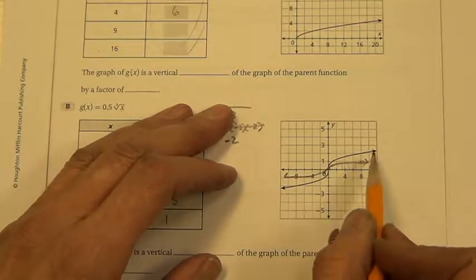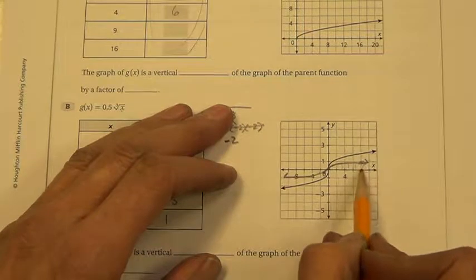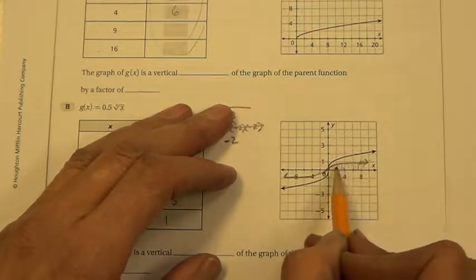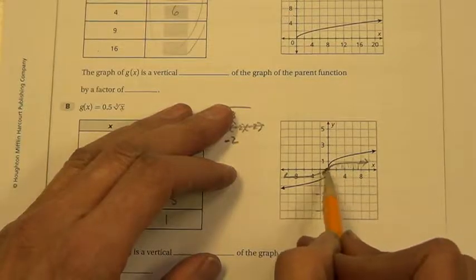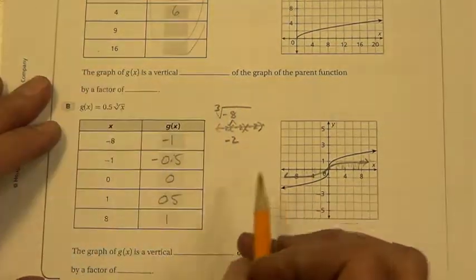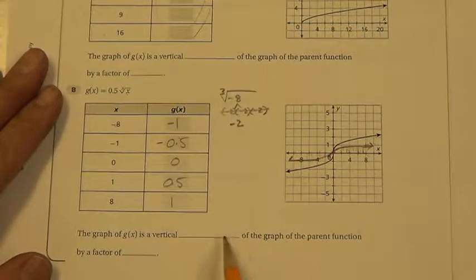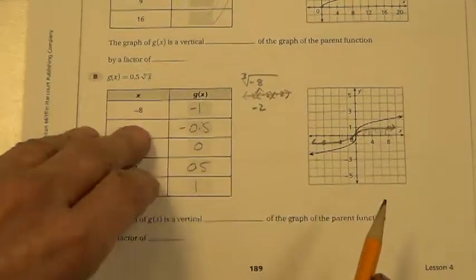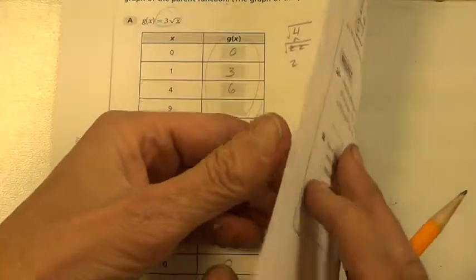Do you see how this new line is closer to the x-axis than the parent? That means it's closer to the x-axis. That means that it's a shrink. A vertical shrink. So down here you would write vertical shrink or compression by a factor of 0.5. These are so much fun. I love them.